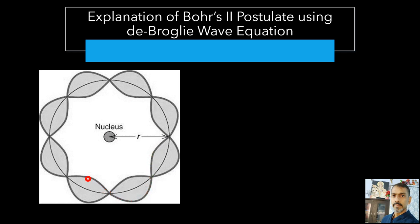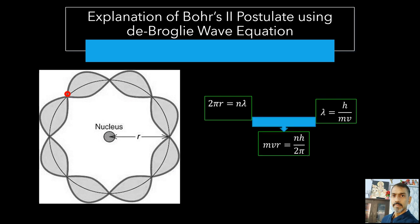Hence, a circular orbit can be taken to be a stationary energy state only if it contains an integral number of de Broglie wavelengths. That is 2πr equal to nλ. But de Broglie wavelength λ equal to h by mv. On solving these two equations we get mvr equal to nh by 2π. This is the famous Bohr's quantization condition for angular momentum.